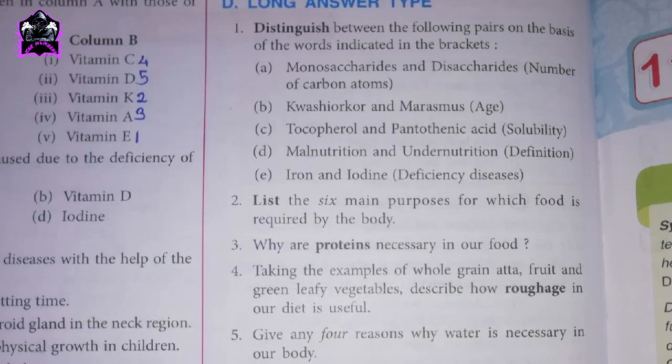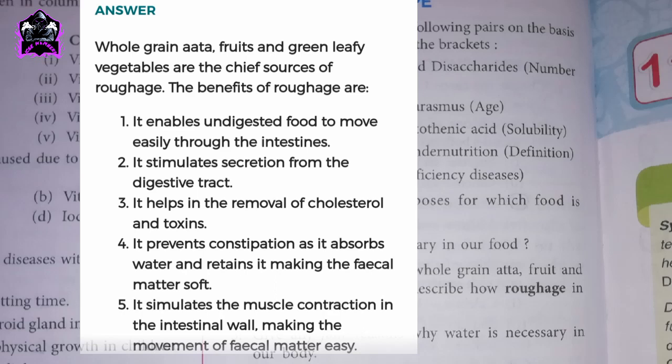Question: taking the examples of whole-grain atta, fruit, and green leafy vegetables, describe how roughage in our diet is useful. Whole-grain atta, fruits, and green leafy vegetables are the chief sources of roughage. The benefits of roughage are: 1. It enables undigested food to move easily through the intestines. 2. It stimulates secretion from the digestive tract. 3. It helps in the removal of cholesterol and toxins. 4. It prevents constipation as it absorbs water and retains it, making the fecal matter soft. 5. It stimulates muscle contraction in the intestinal wall, making the movement of fecal matter easy.